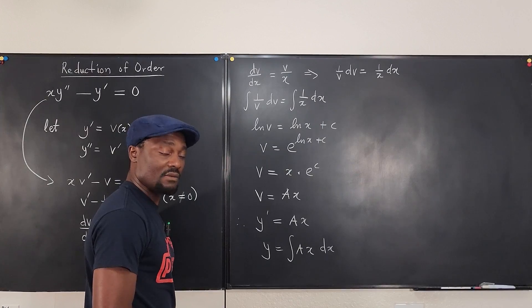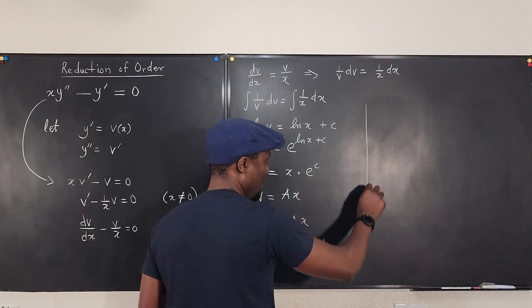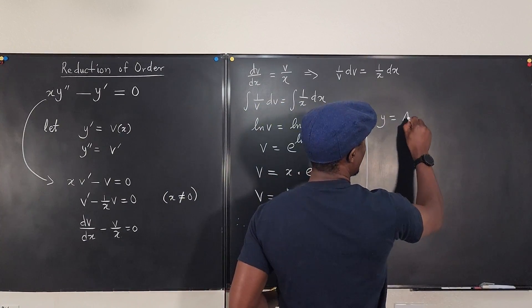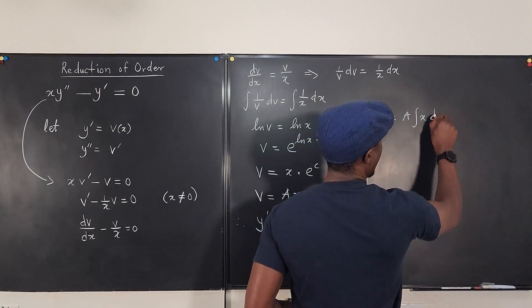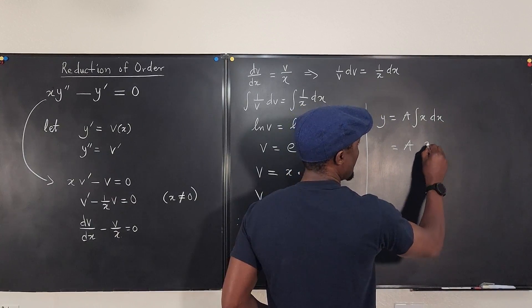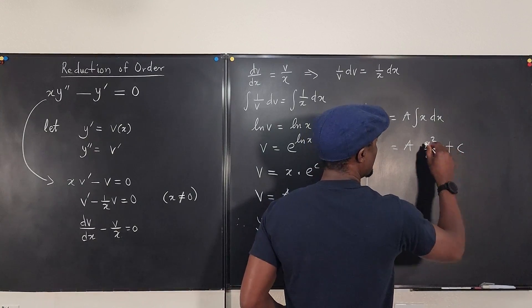And what's that? If we integrate ax, well, this is the same thing. Let's put it here. We know that y will be equal to a times the integral of x dx, which is equal to a times x squared over 2 plus c.